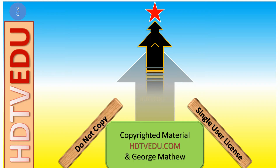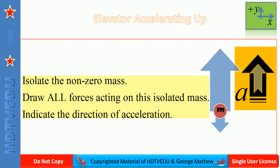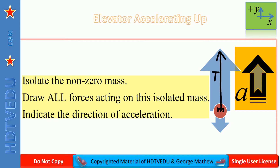We isolate the mass and then draw all the forces acting on it. We are told that the acceleration is vertically up — that means the force up has to be greater than the force down. The forces acting on the mass are tension vertically up and gravitational force vertically down, with acceleration vertically up.